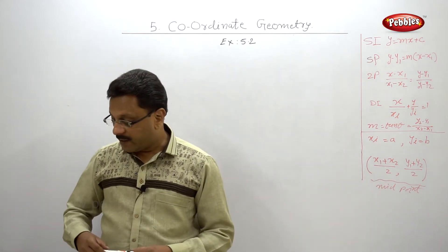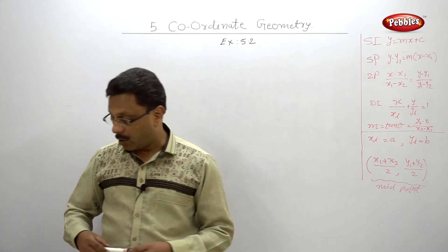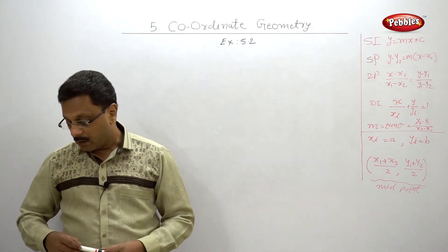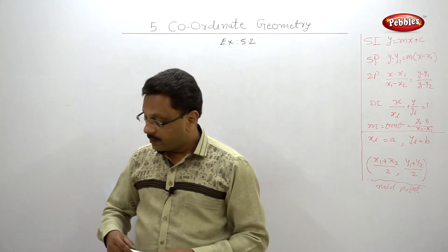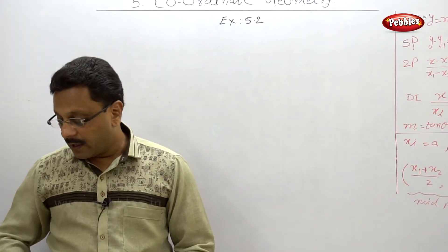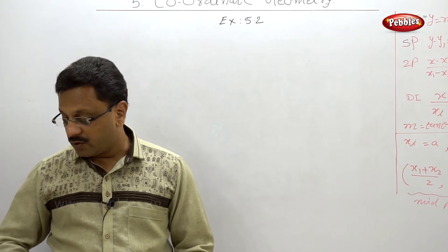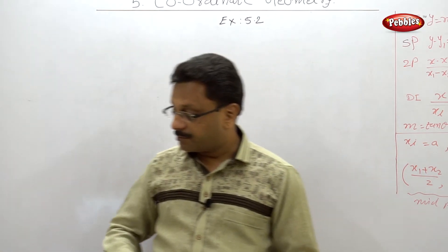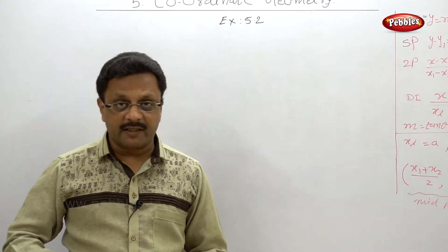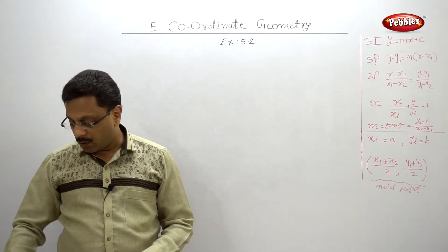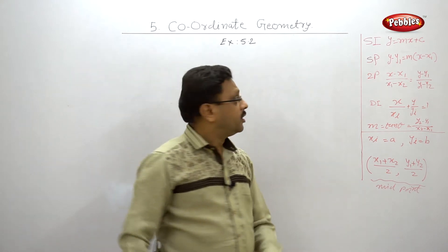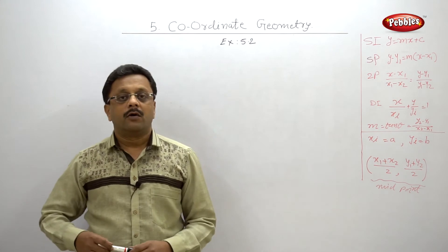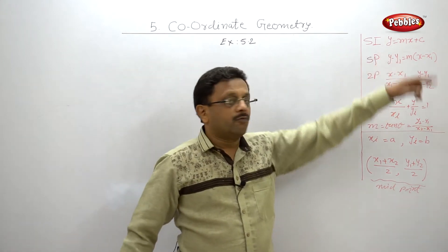First question, find a slope and y-intercept of the lines given below. You can refer your book there. Four sub-questions are there. And you can see that the first question has come for one mark in March 12 exam. Again one mark for March 15 exam. Very simple problem. They are already given the equations in a form of y is equal to mx plus c. And you have to find out what m and what c is.